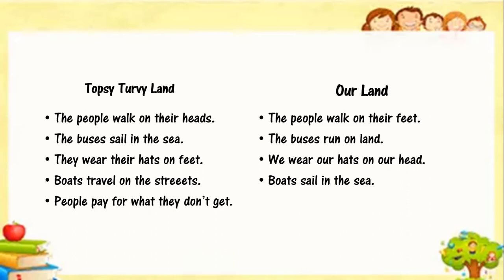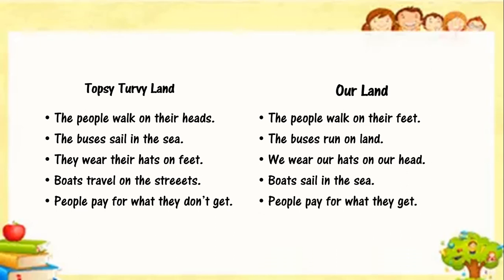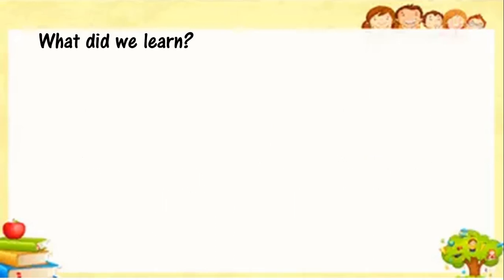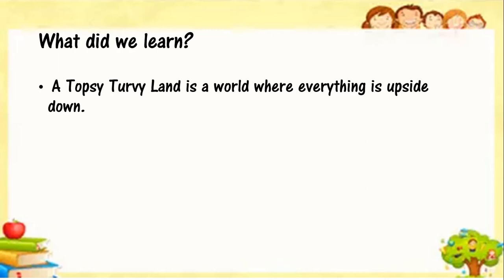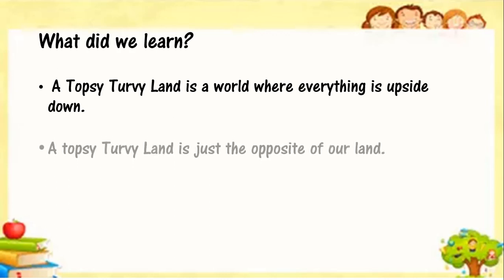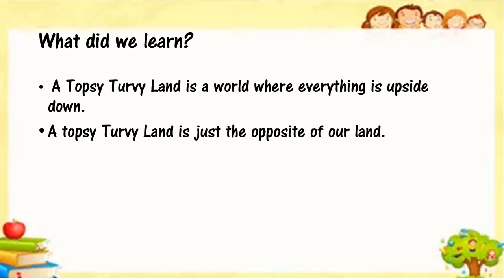In topsy-turvy land, people pay for what they don't get — log us cheez ke liye paise deete hain jo cheez unhye milti nahi. But in our land, people pay for what they get. So, a topsy-turvy land is a world where everything is upside down, sabkuch ulta pulta hai, and it is just the opposite of our land.